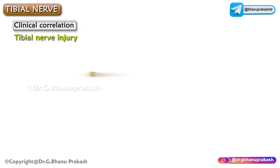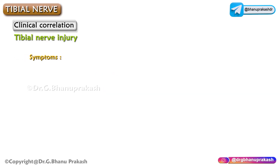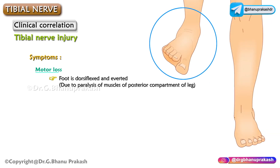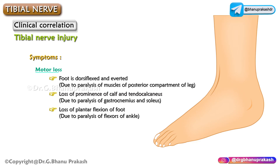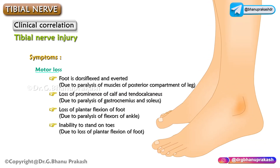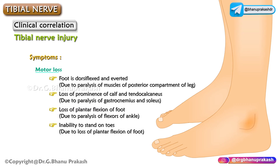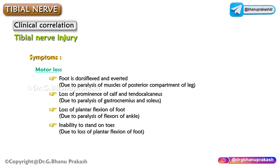Tibial nerve injury is more commonly caused by lacerated wounds in the popliteal fossa or posterior dislocation of the knee joint. Motor symptoms include: foot is dorsiflexed and everted due to paralysis of posterior compartment muscles; loss of prominence of the calf and tendo calcaneus due to paralysis of gastrocnemius and soleus; loss of plantar flexion of the foot due to paralysis of ankle flexors; and inability to stand on toes due to loss of plantar flexion.